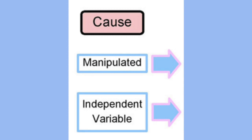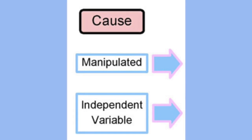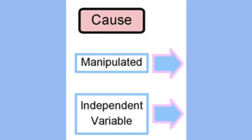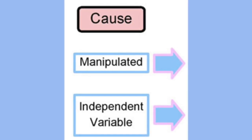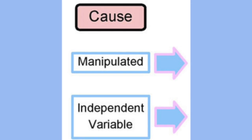Once a testable question has been decided, determine what the independent, dependent, and control variables will be. A variable is anything that changes in a scientific experiment. The control is what you use to compare the results at the end of the experiment. The control variable is your baseline or starting point — it is how something already exists in nature without manipulation.